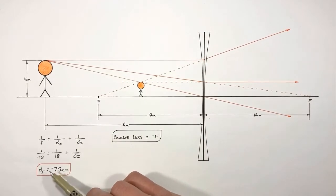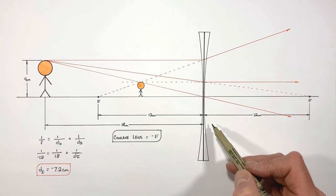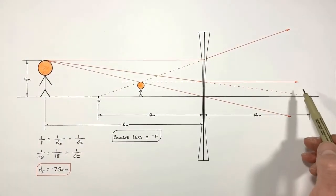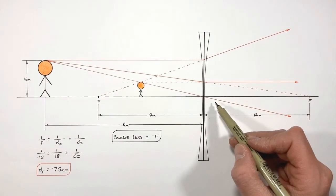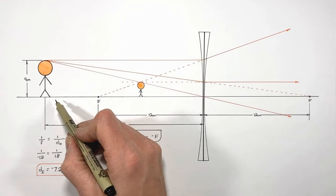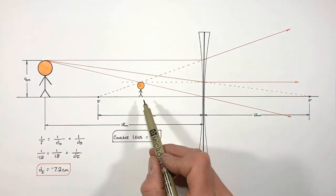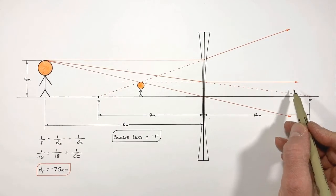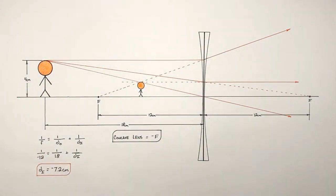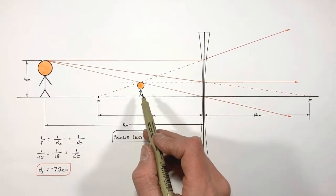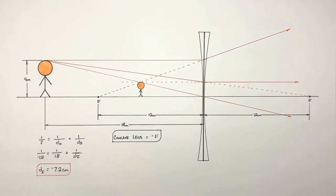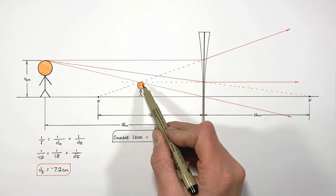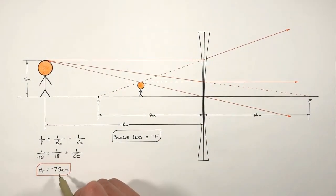The negative image distance has a specific meaning for lenses. Unlike mirrors — where the sign simply indicates which side of the mirror the image is on — for a lens a positive image position indicates the image appears on the opposite side of the lens from the object, while a negative image position indicates the image is on the same side of the lens as the object. Because the rays appear to converge at a point but don't actually physically cross there, the image is virtual.